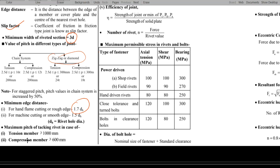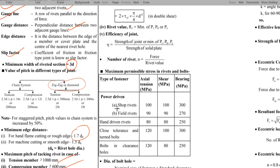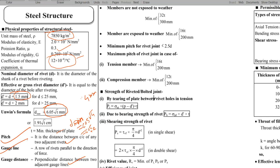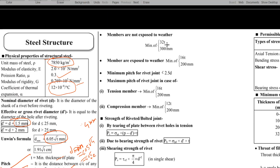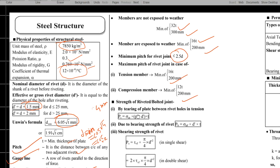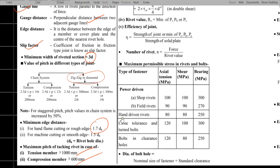Maximum pitch of rivet, for tension member it should not be more than 1000 mm, compression member it should not be more than 600 mm. Next we have members which are not exposed to weather, minimum 32t or 300 mm. Exposed to weather, minimum of 16t or 200 mm.